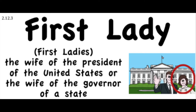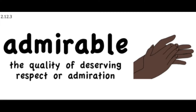First lady. The first lady is the wife of the president of the United States or the wife of the governor of a state. Mary Todd Lincoln became the first lady of the United States in 1861 when her husband, Abraham Lincoln, became president. Admirable. The word admirable refers to someone or something that deserves respect. President Lincoln's leadership during the Civil War was admirable. Think of someone or something that you think is admirable. Listen to whoever is helping you today and talk about why you think this person or thing is admirable. Be sure to use the word admirable when you are having this discussion.